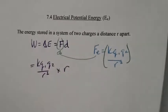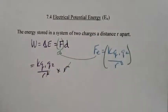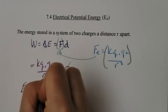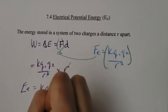I have an R in the numerator and R in the denominator. They will cancel out. So I am left with this formula: EE is equal to KQ1Q2 over R.